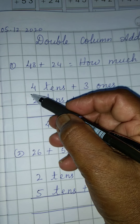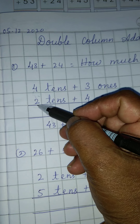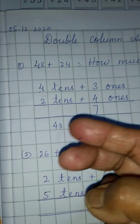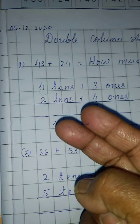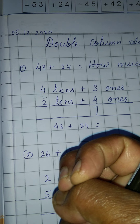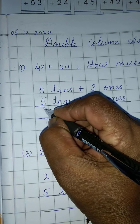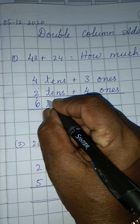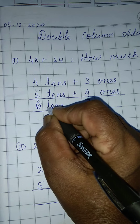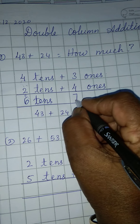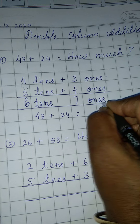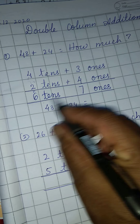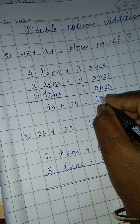Then go to tens place. 4 plus 2. Count again — 4 in the mind, 2 fingers up. After 4, what number will come? 5, 6. Write your 6. Okay children, then here you have to add 6 tens plus 7 ones. Now how much is it? 43 plus 24 is equal to 67. Write the answer here — 67.